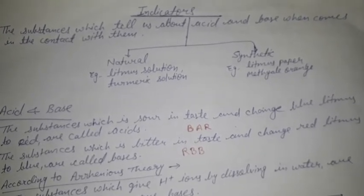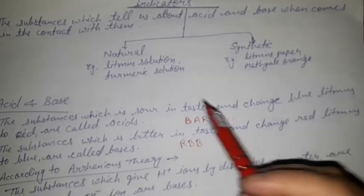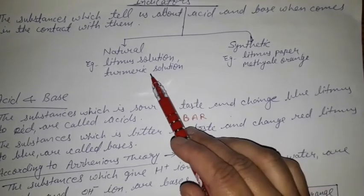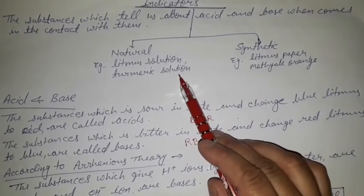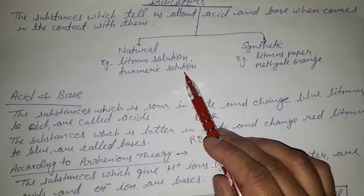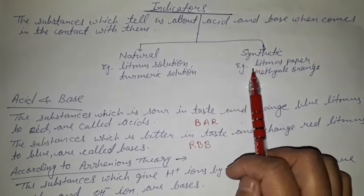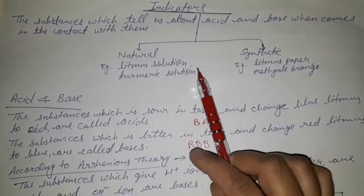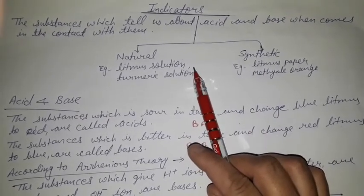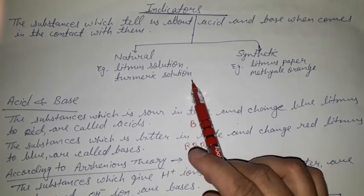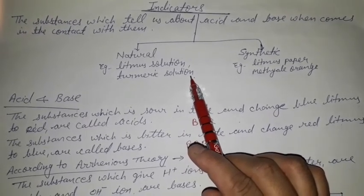Indicators are divided into two parts: natural indicators and synthetic indicators. Natural indicators are those we get from nature, and synthetic indicators are those made by chemicals. Examples of natural indicators are litmus solution and turmeric solution.